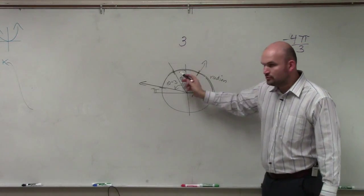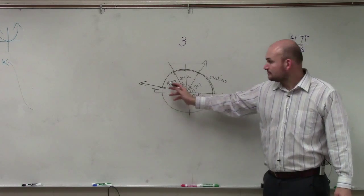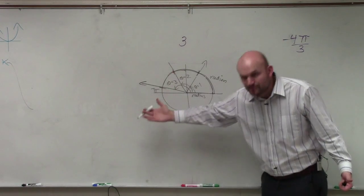So one radian, two radians, three radians, right? And then halfway around circle, we said, was pi radians.